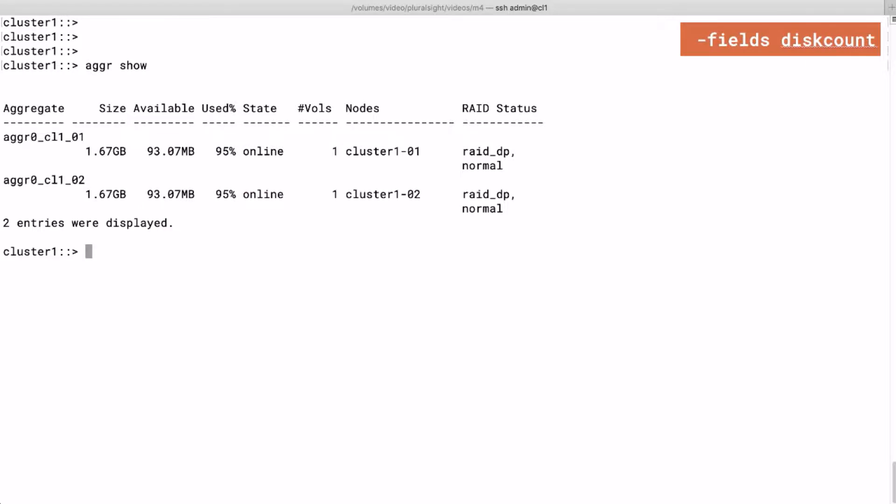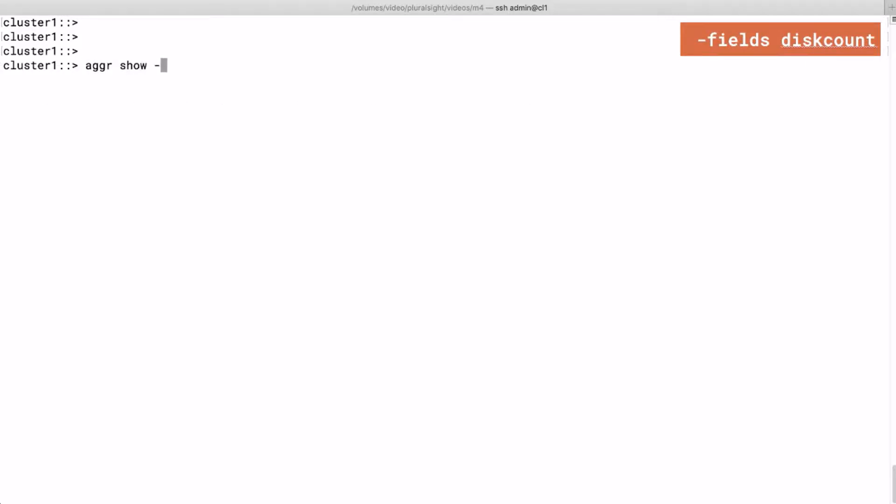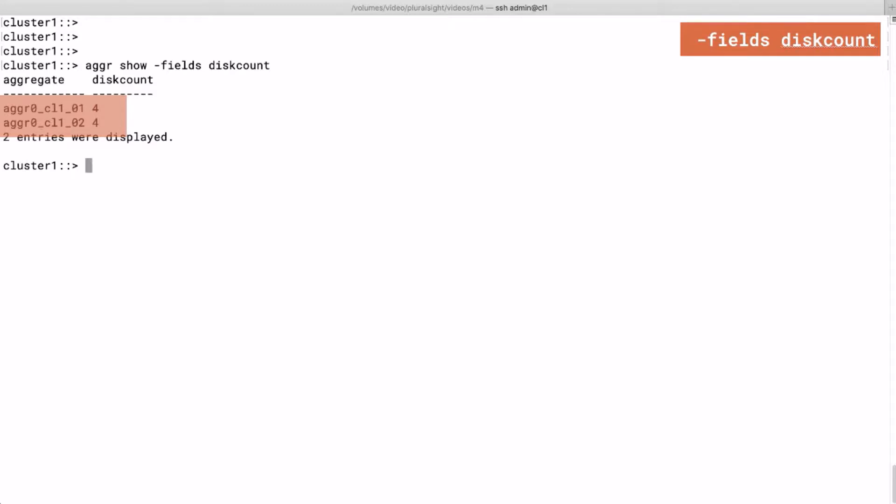Also if you want to list the number of disks in an aggregate you can add the dash fields option to the agr show command, and then enter the disk count argument. Like this. As you can see this first node of cluster 1 has one aggregate and the aggregate has four disks. And for the second node the same thing goes.